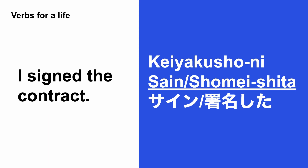The first verb is サイン (sign) or 署名 (shomei). 署名 is a little more formal, so people usually use 署名 at business occasions. For example: 契約書にサインした / 契約書に署名した — I signed the contract.